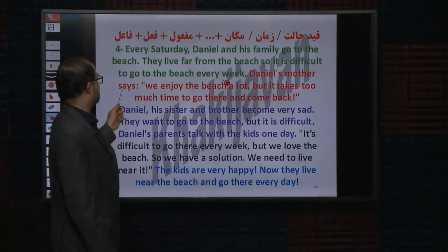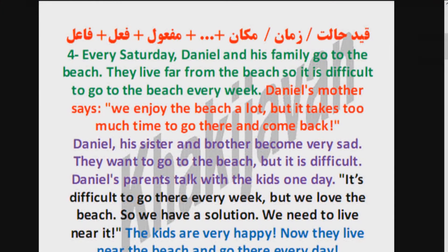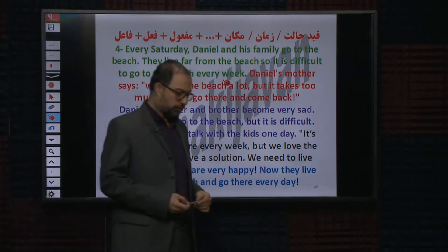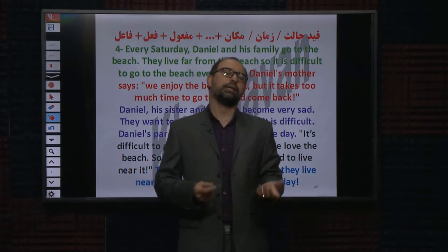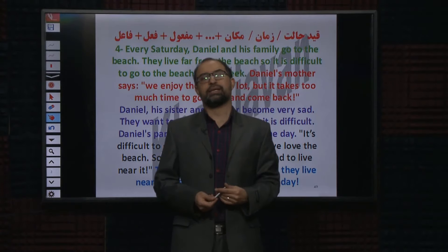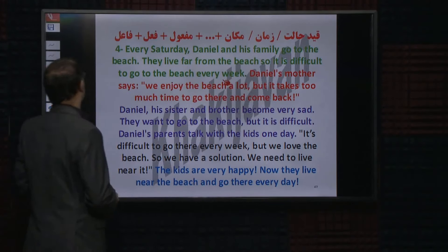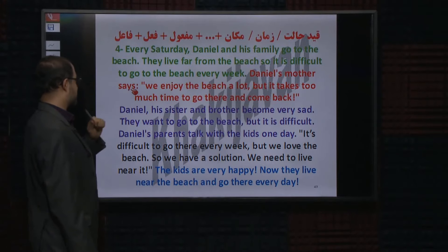Daniel's mother says. مادر دانیل میگه. Daniel's mother میشه فاعل، says میشه فعل. یادتون میاد زمان حال ساده برای اتفاقاتی که همیشه رخ میده استفاده میکنیم. وقتی که فاعلمون سوم شخص هست، به فعلمون S سوم شخص میدهیم. Daniel's mother سوم شخصه، به فعلمون S دادیم.